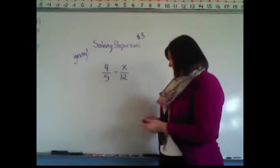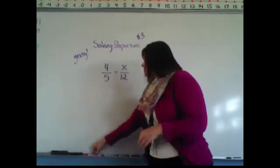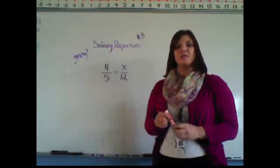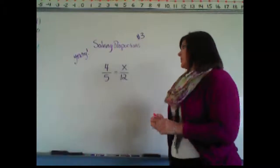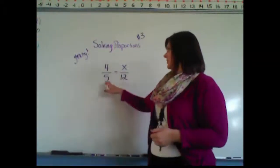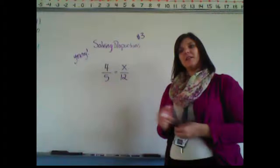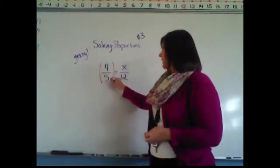Okay, let's see how you did. Using the fraction buster method or the cross multiplication method, what we're going to do is look at 5 and 12, our two denominators. So we multiply both sides by 5 and 12.